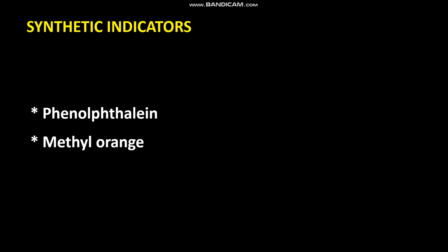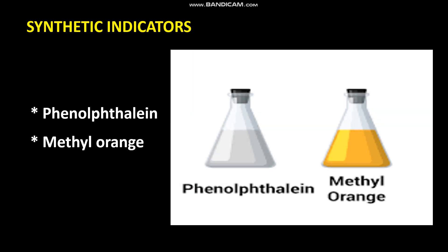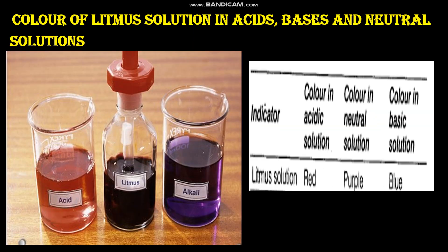Examples of synthetic indicators are phenolphthalein and methyl orange. Now let us see what colors these indicators — litmus solution, phenolphthalein, and methyl orange — show in acidic, basic, and neutral solutions.